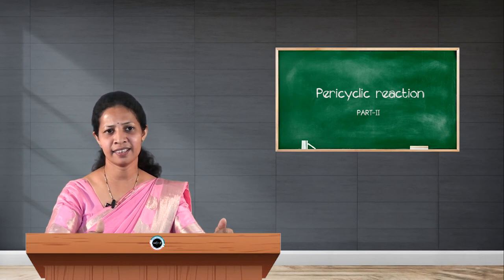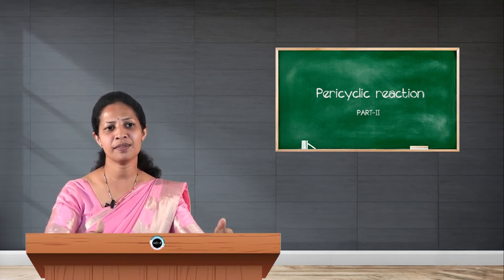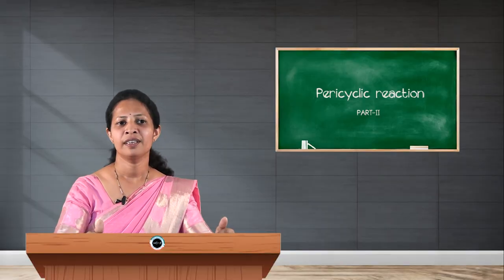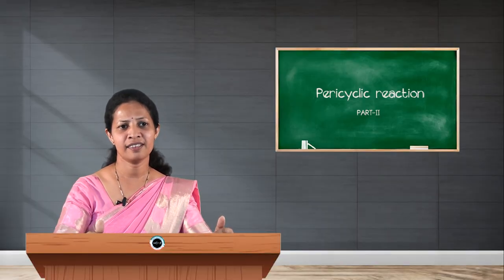In the excited state of 1,3-butadiene, one electron gets excited from psi 2 to psi 3. Therefore psi 3 becomes the highest occupied molecular orbital and is considered as HOMO, and psi 4 is LUMO. The combination of psi 3 and psi 4 are the frontier molecular orbitals in the excited state. Identification of these frontier molecular orbitals is very important because pericyclic reactions take place in these molecular orbitals.